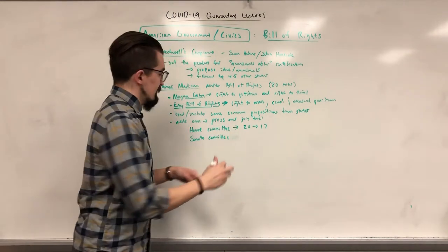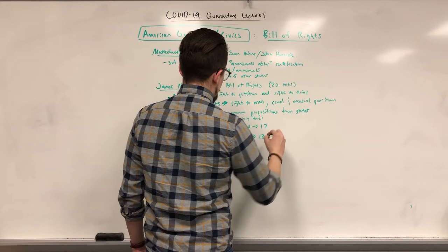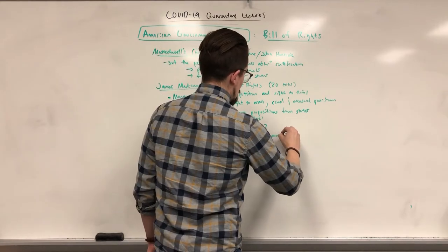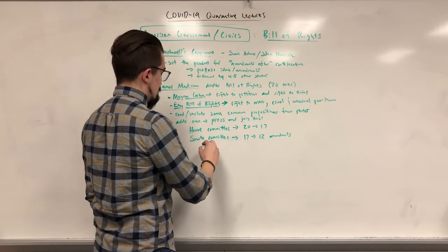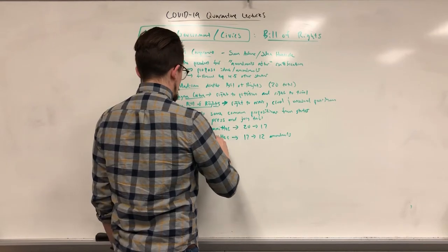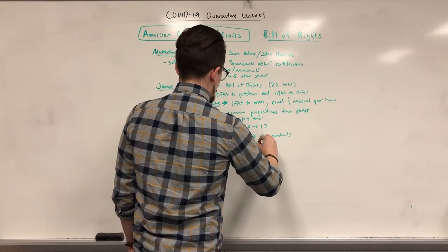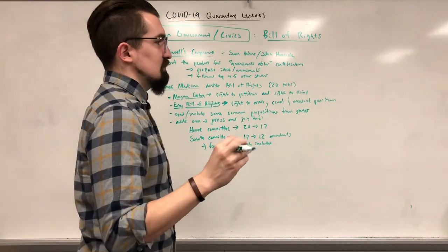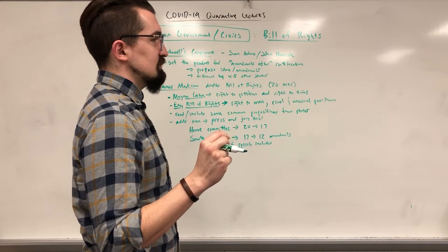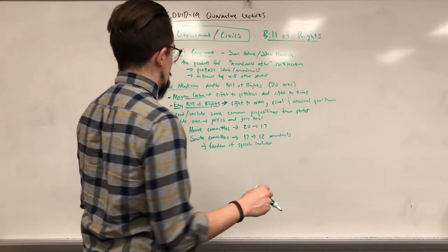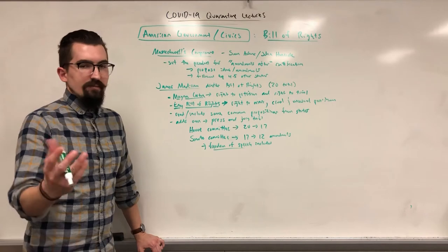The Senate formed their own committee when they received it from the House and condensed it even further. Either the House or Senate also added a couple of things Madison didn't include — notably, freedom of speech was one addition. There may have been another, but regardless, we'll talk about what actually got passed.